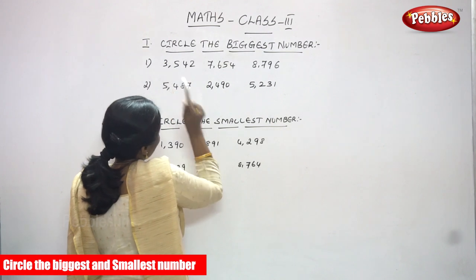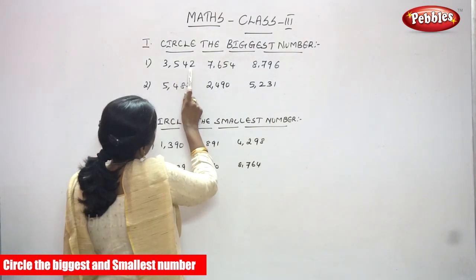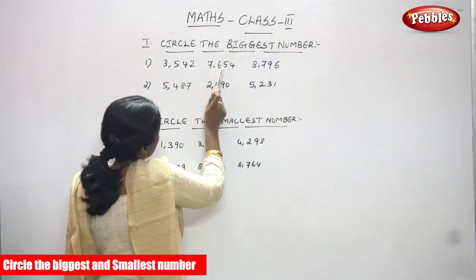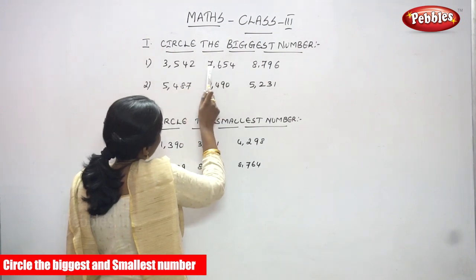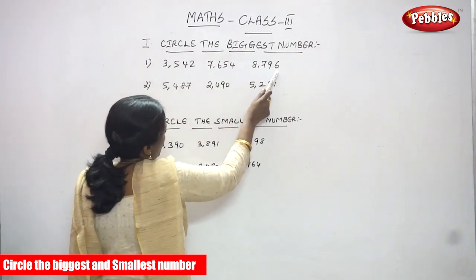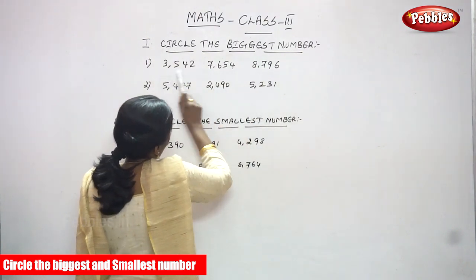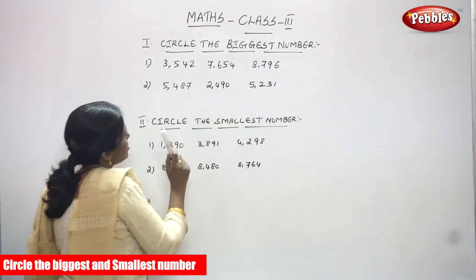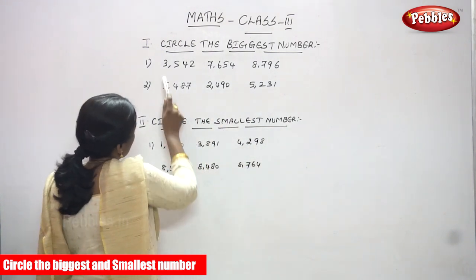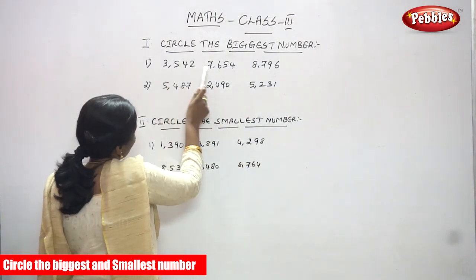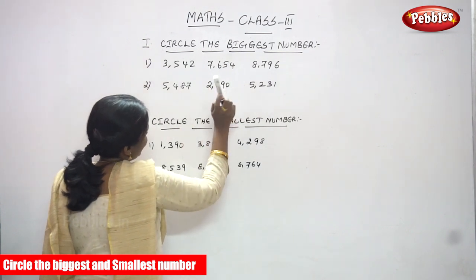These are all four-digit numbers, so you have to concentrate only on the thousands place first. The thousands digit of the first number is 3, giving 3000. The second number has 7 in the thousands place, giving 7000. The third number has 8 in the thousands place, giving 8000. Which is the greater one? 8000 is the greatest.